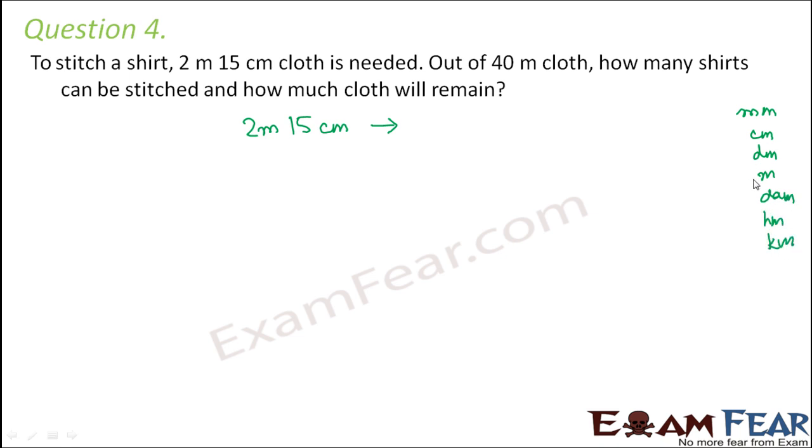So we want to convert meter to centimeter. So we are going up. Therefore, we will multiply by how many zeros? One, two, two steps. So two zeros. So we will multiply by 100. So two meters would mean 2 into 100 centimeter plus you have 15 centimeters. So this would be 200 plus 15 centimeters. That is 215 centimeters. So you need 215 centimeters to make or to stitch one shirt.